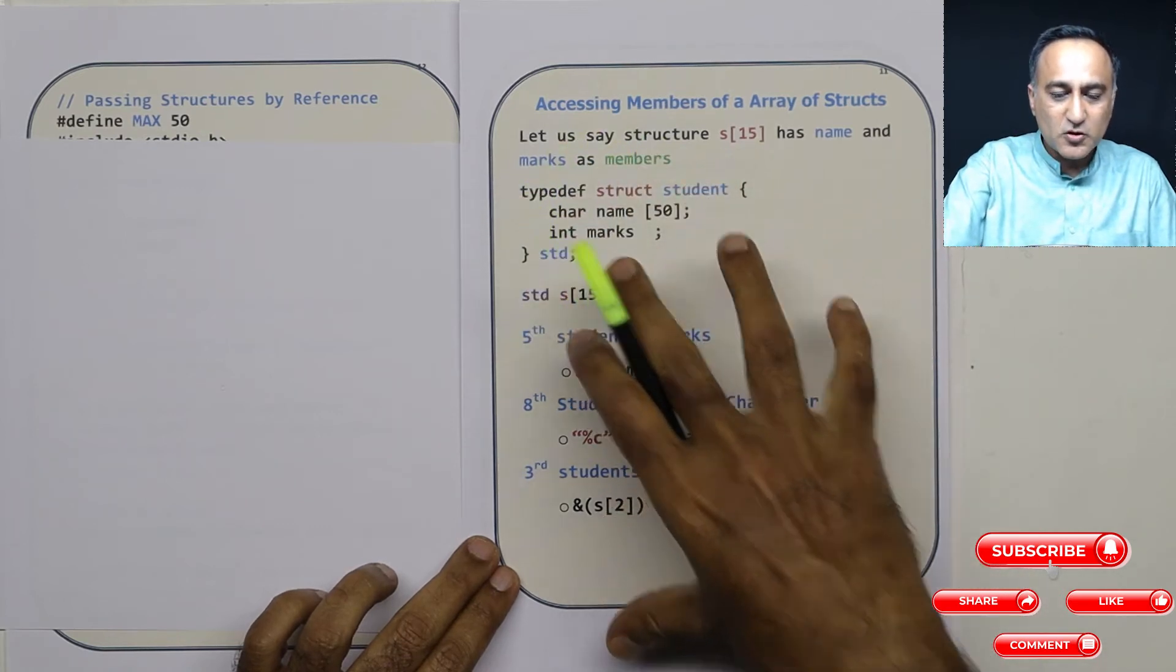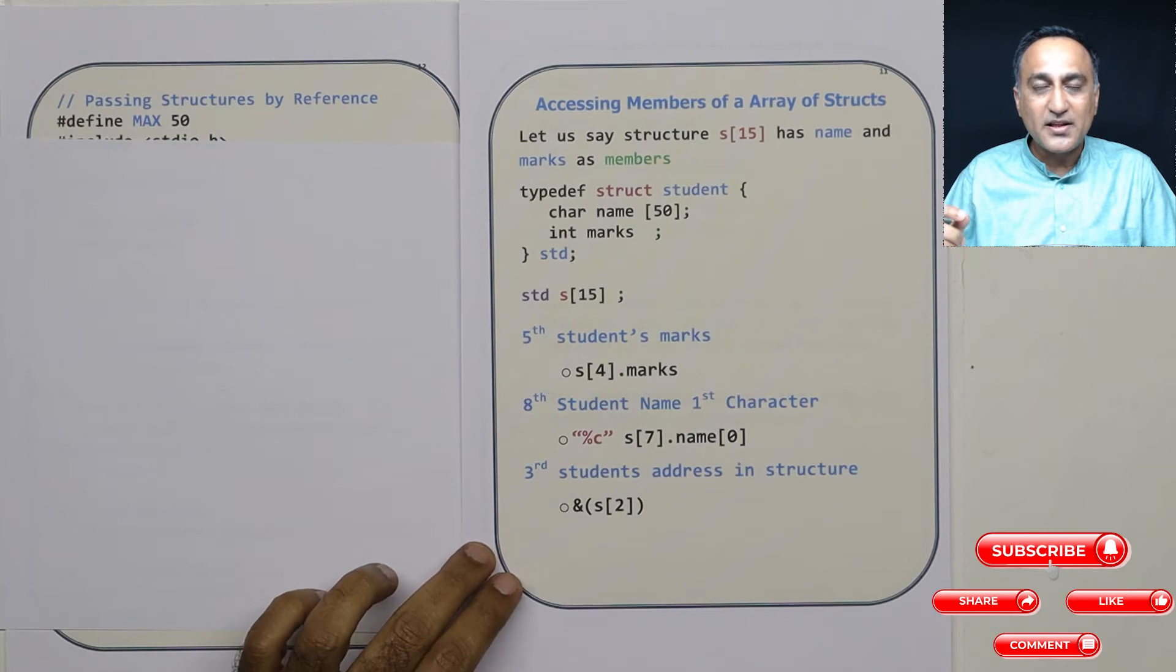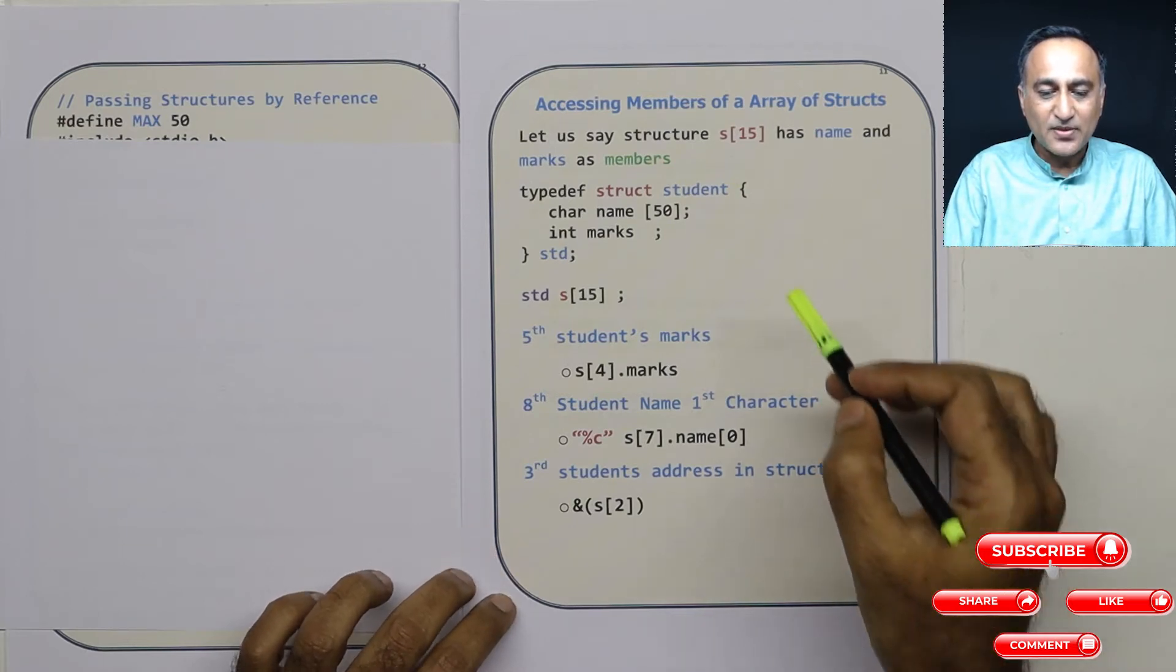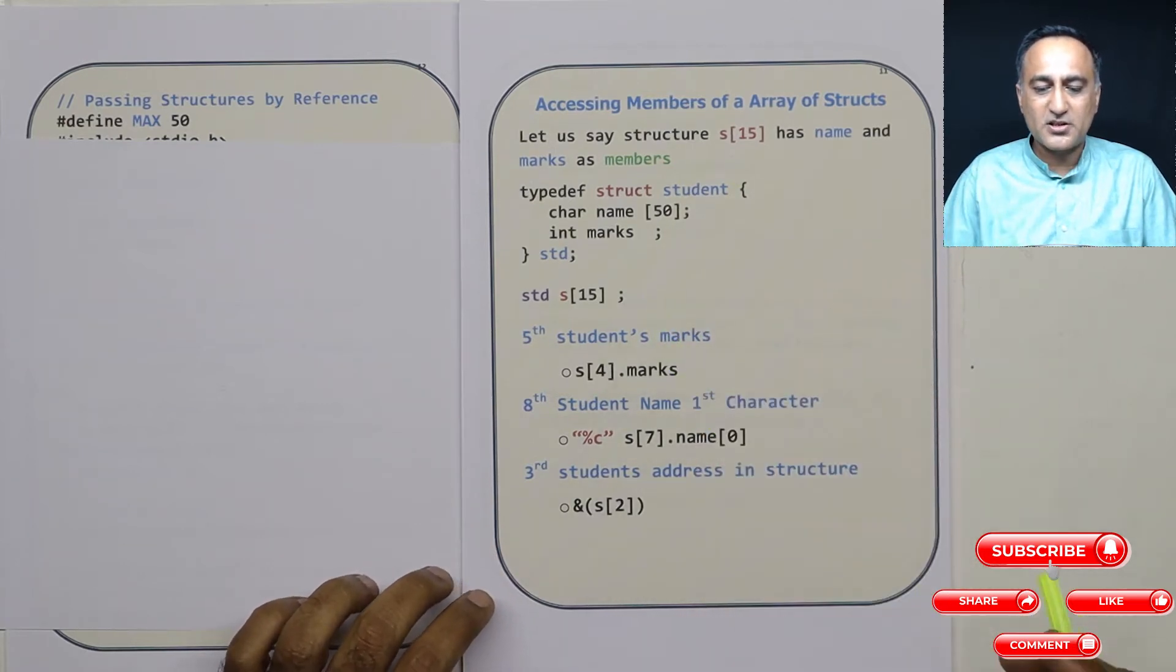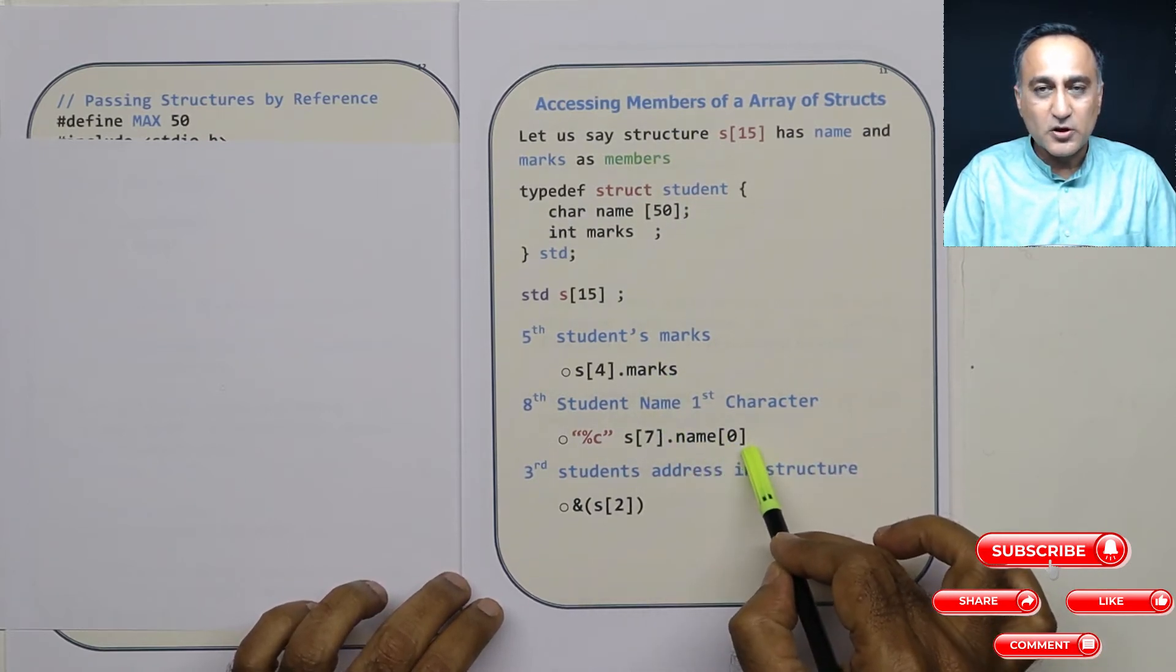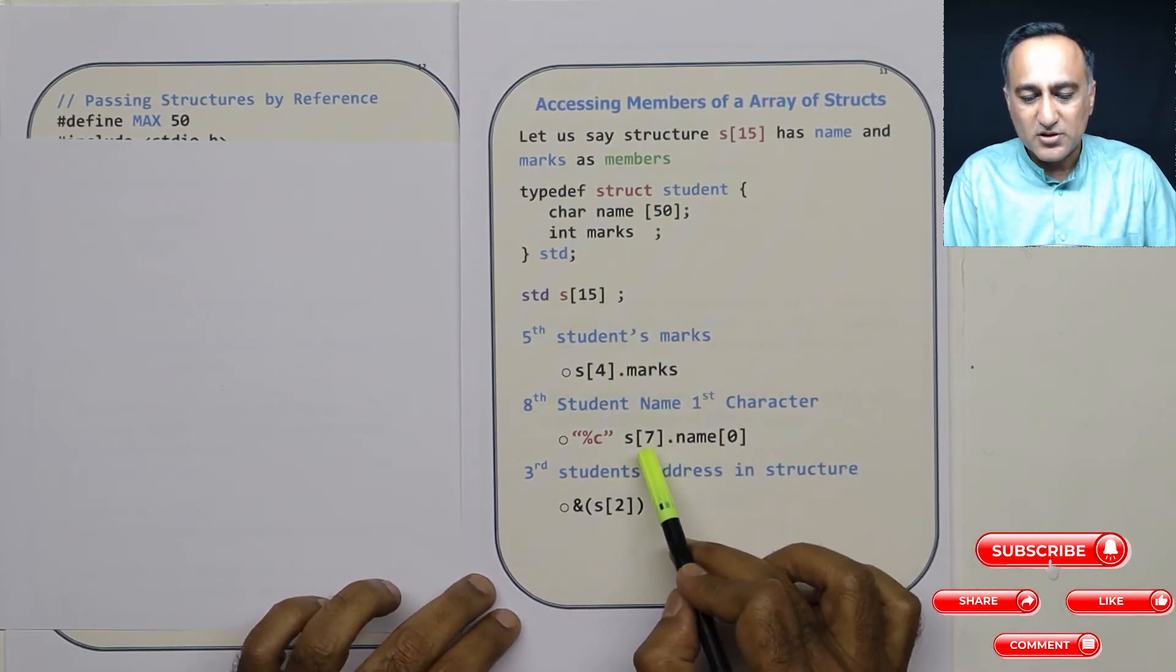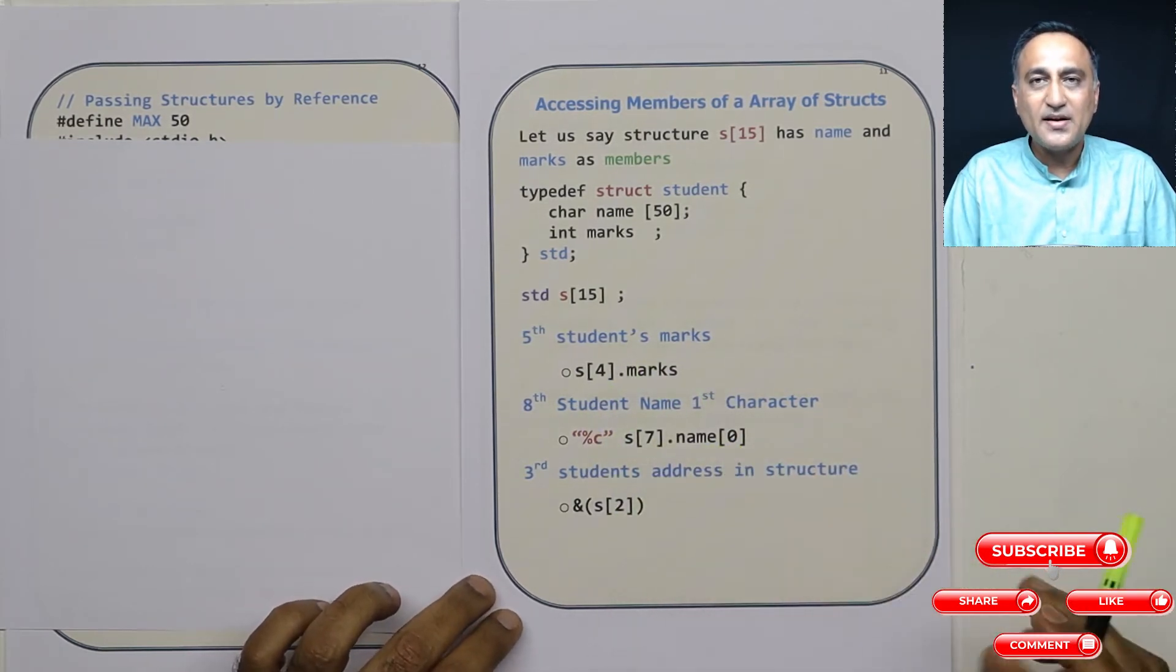So I hope this way you have understood how to take a look at different members and their individual characters in an array of structure, because sometimes you will be required to access specific characters. Nothing much really changes because this is an array.